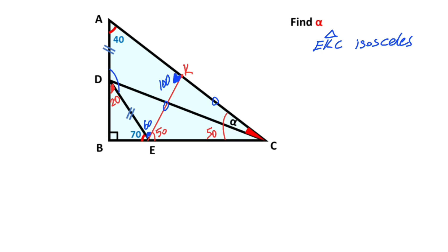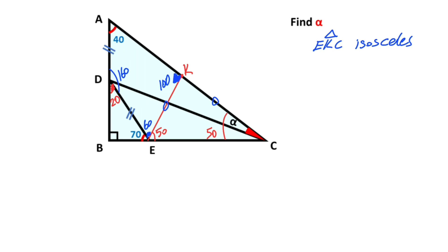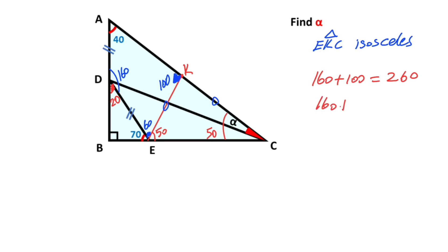If you notice that angle ADE is 160 degrees. So if you focus on this quadrilateral, the sum of opposite angles equals 260 degrees. Therefore when we multiply 100 degrees by 2 and add 160 degrees the total becomes 360 degrees, so points A, K, and E lie on the circle.